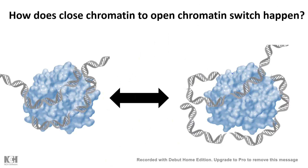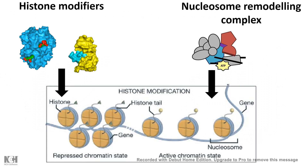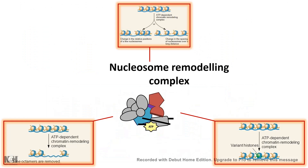The transition between closed chromatin and open chromatin is critical, but how does this switch happen? It turns out there are specific histone modifiers and nucleosome remodeling complexes that bring about these changes. Histone modifiers can modify histones and alter the degree of interaction between DNA and histones, thereby modulating nucleosome compaction. Nucleosome remodeling complexes can slide nucleosomes away or increase the gap between them, reorganizing the chromatin landscape in an ATP-dependent manner.